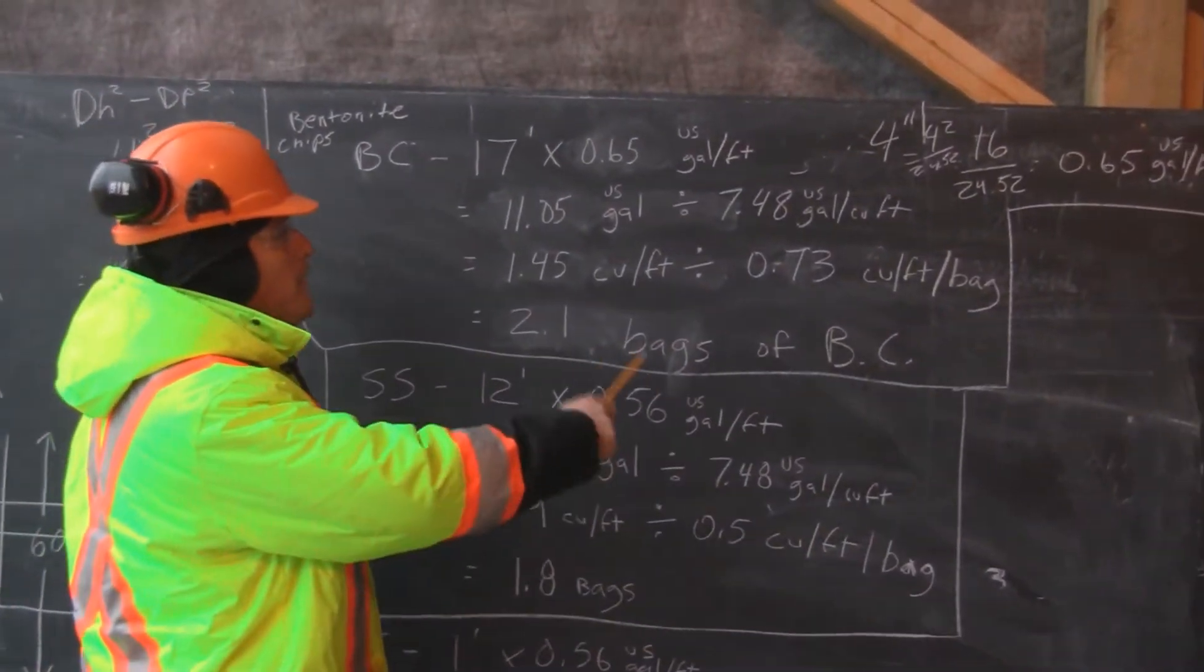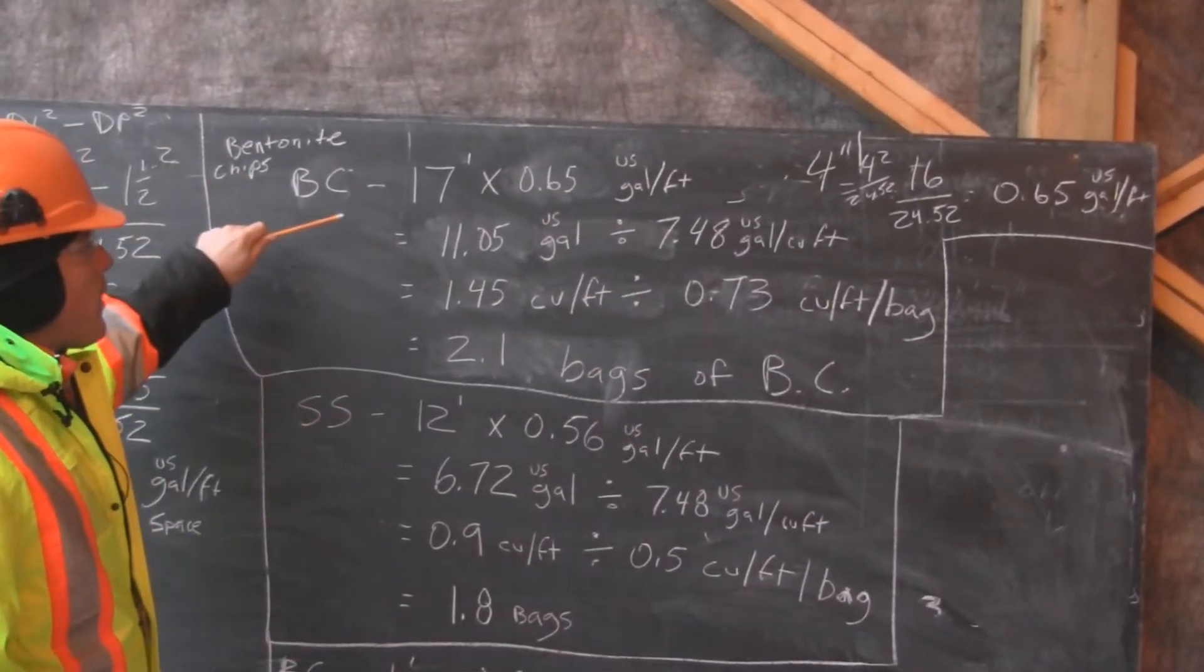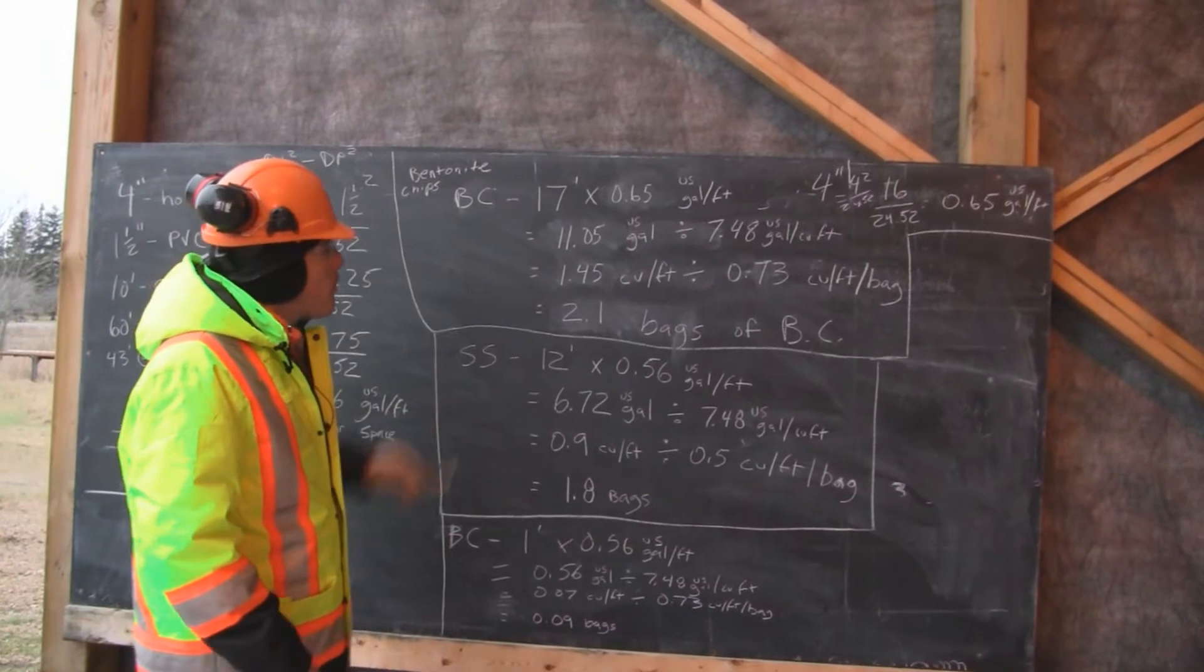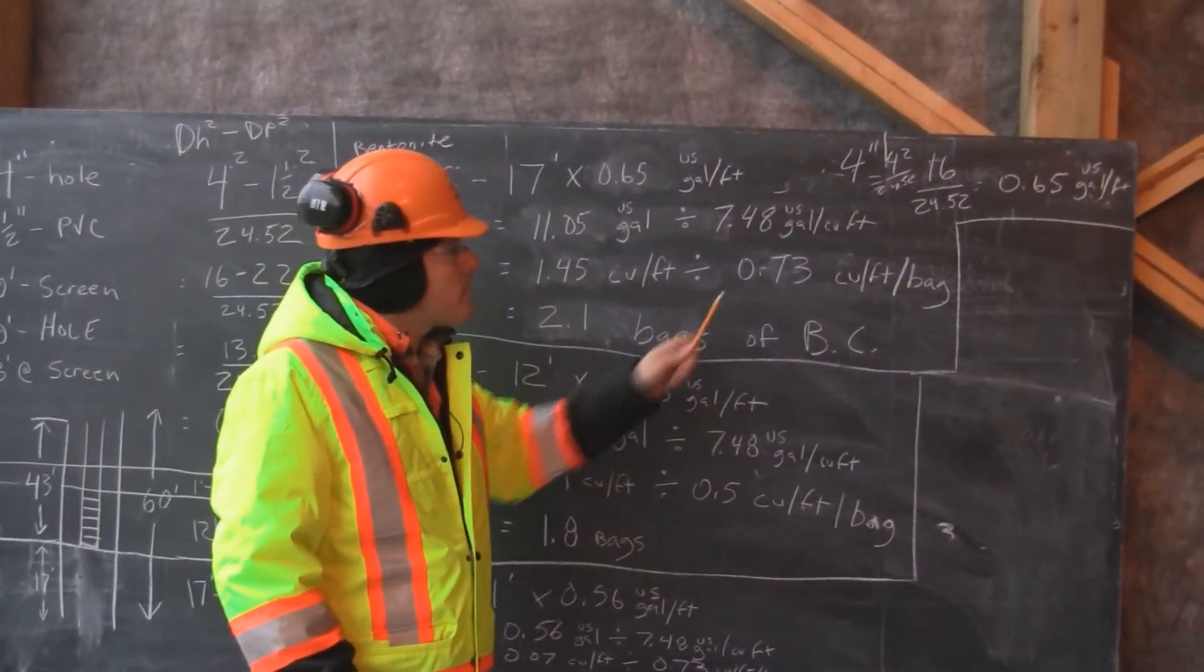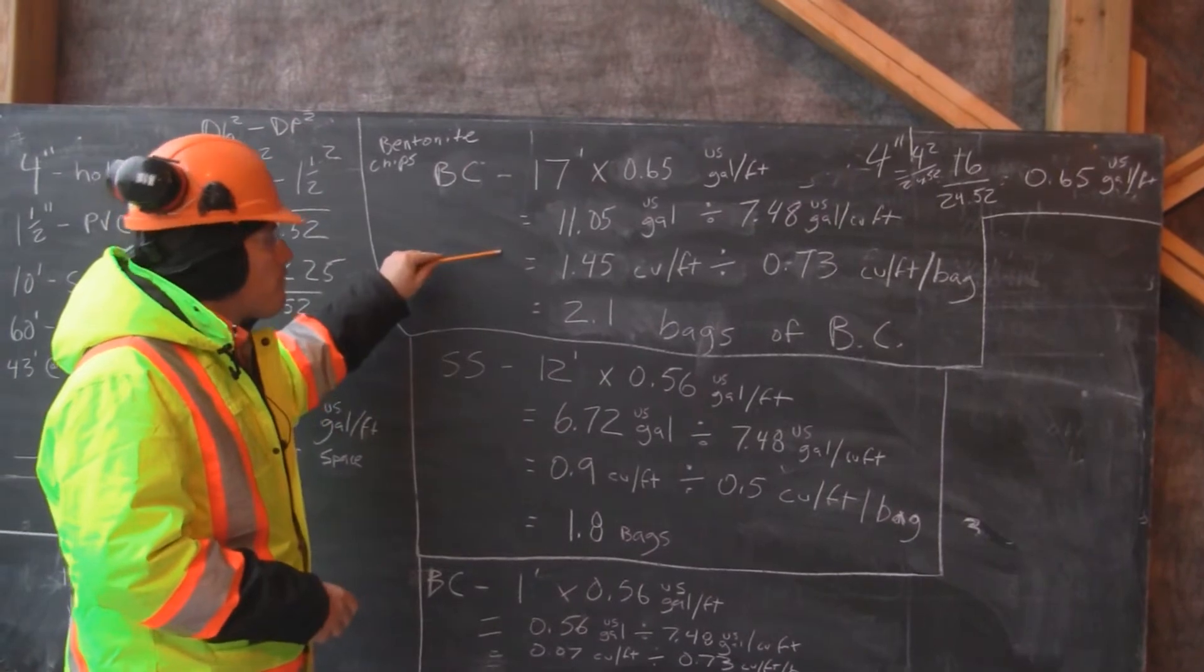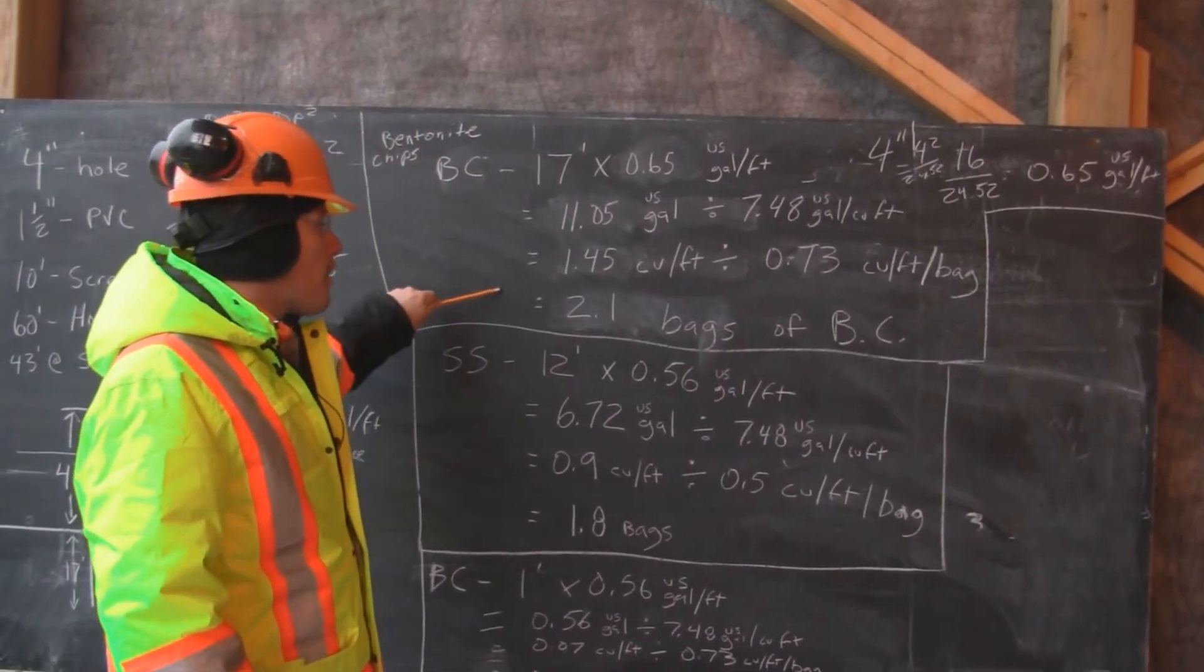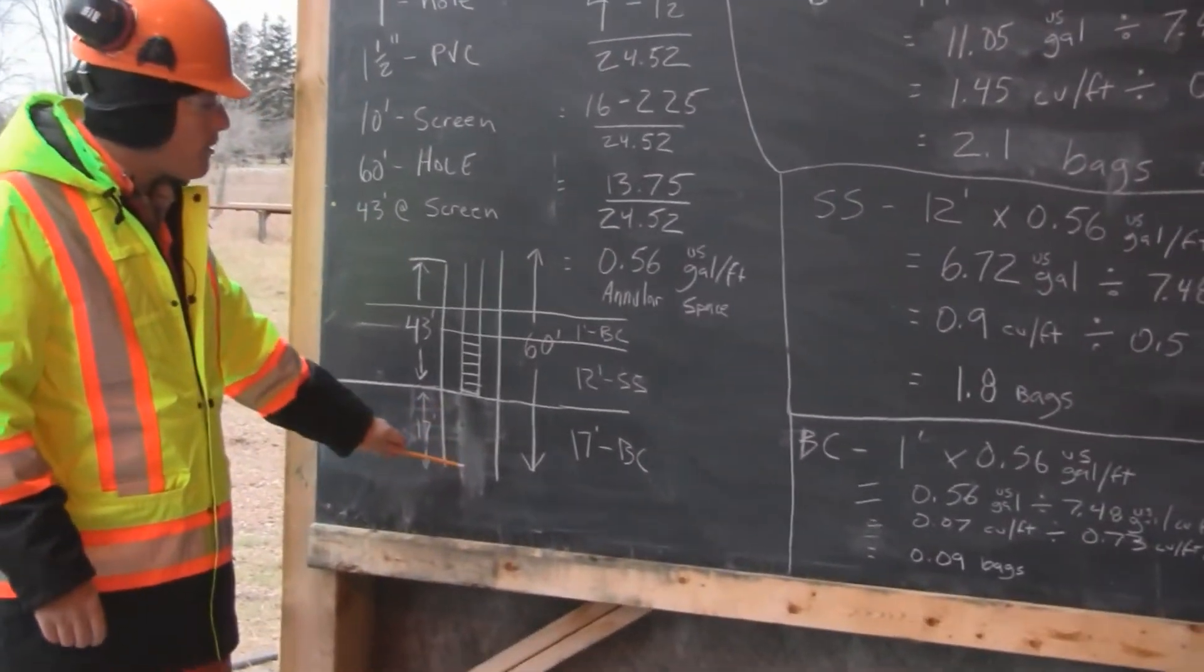There are 7.48 US gallons per cubic foot. We take 11.05 US gallons divided by 7.48 US gallons per cubic feet to give us 1.45 cubic feet. There are 0.73 cubic feet of bentonite chips per bag. We take our 1.45 cubic feet divided by 0.73 and gives us a total of 2.1 bags of bentonite chips.